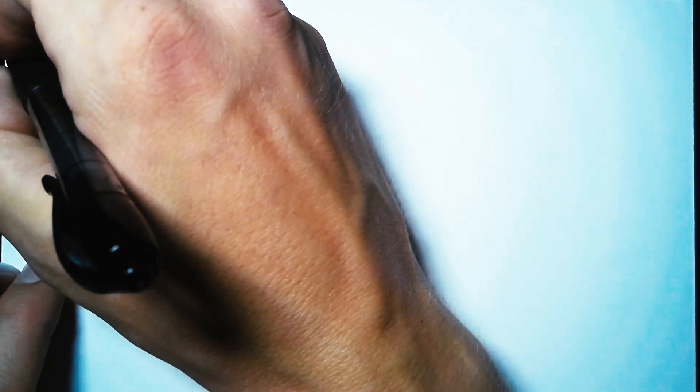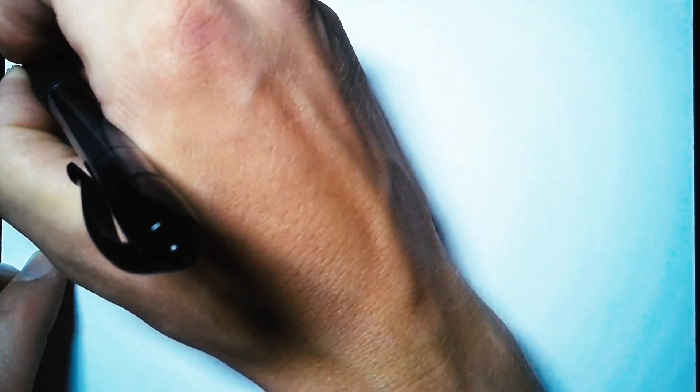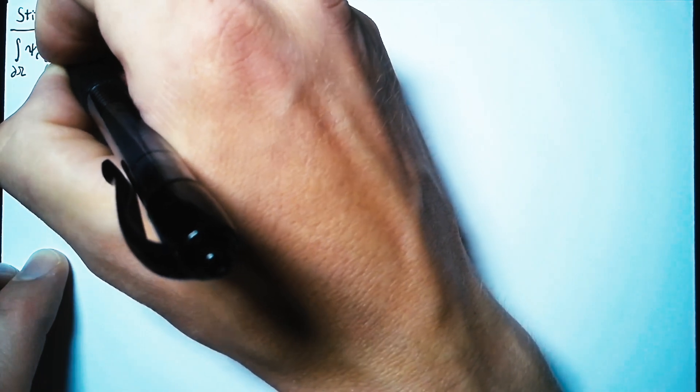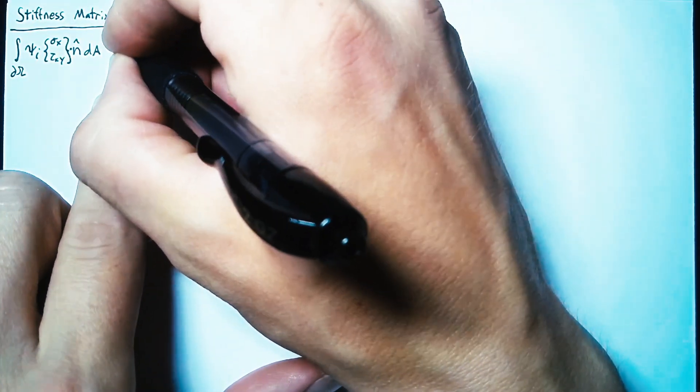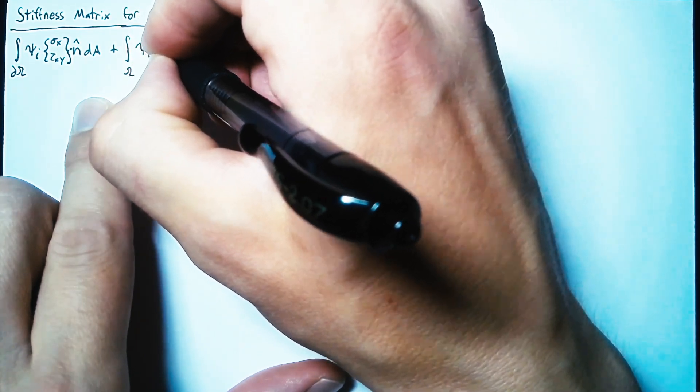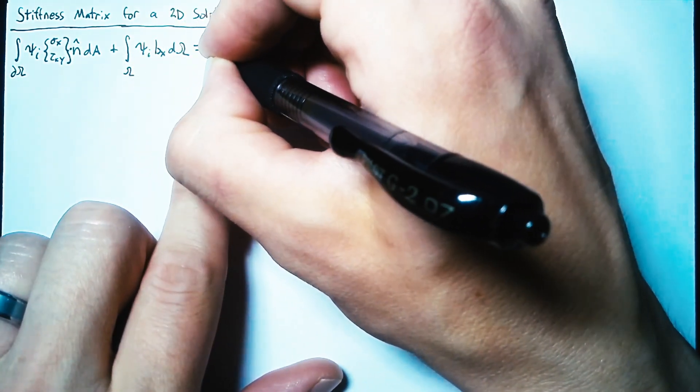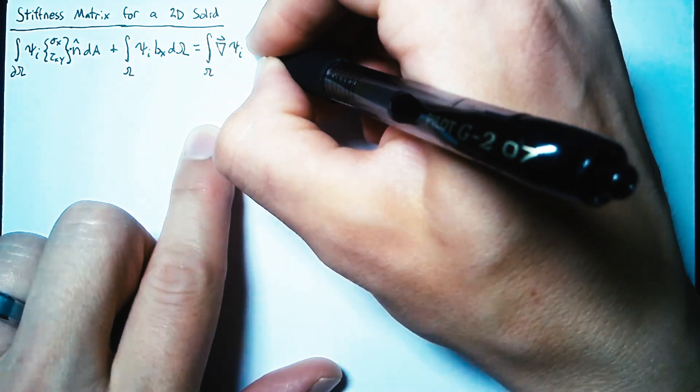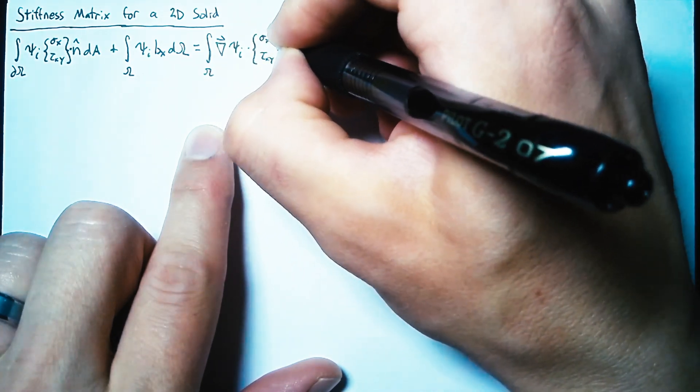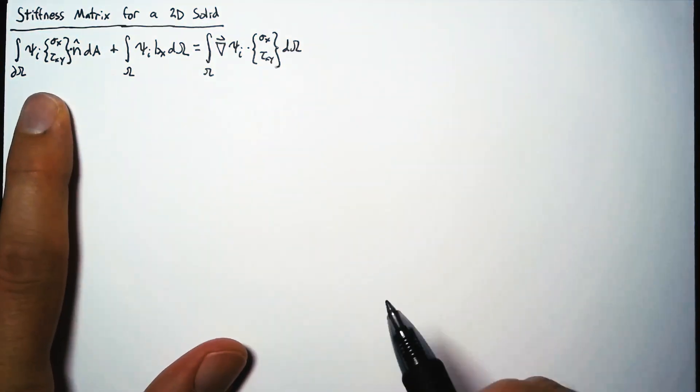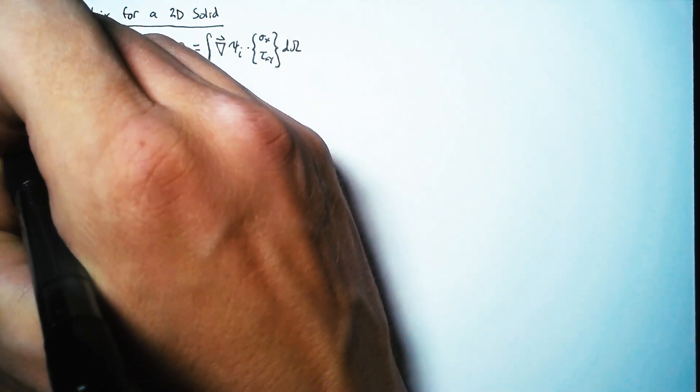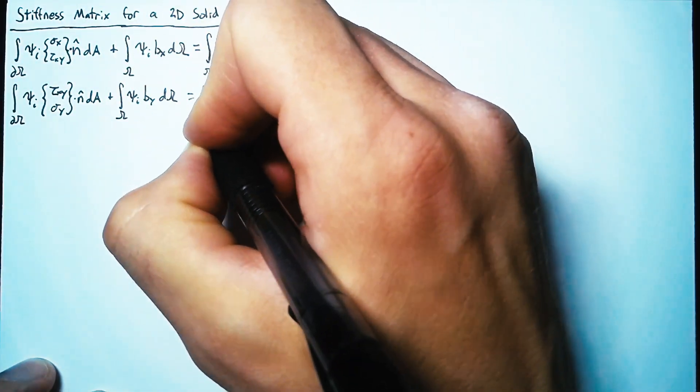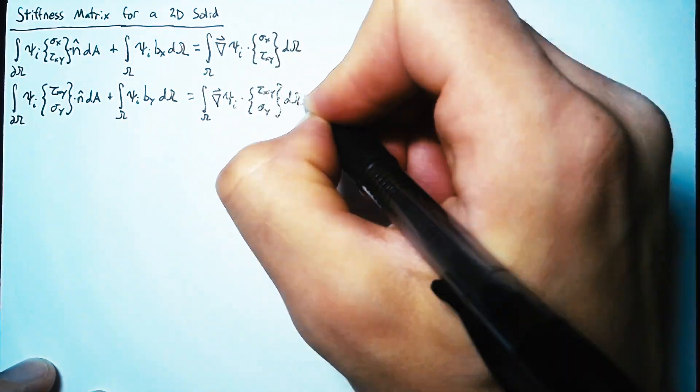This work is built off of a previous video where we found two equations through the Galerkin method. This first equation is based off of the sum of the forces in the x-direction. The first term deals with tractions on the surface of our body. The second term deals with the body forces, and the third term is looking at the stresses and strains inside the surface. The second equation looks very similar. The only real difference is the terms inside that vector of stresses and the direction of our body force.